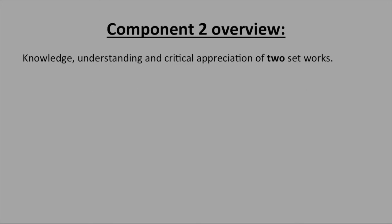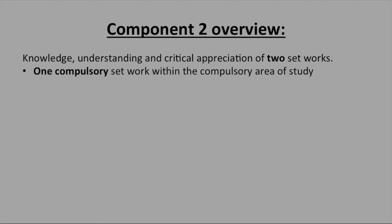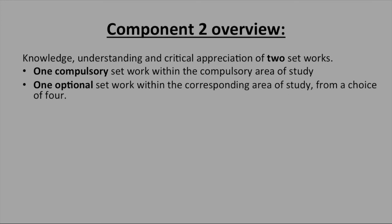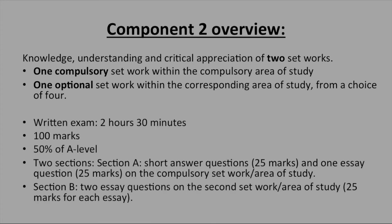For component two, critical engagement, students need knowledge, understanding and critical appreciation of two set works: one compulsory set work within an area of study, and one optional set work within the corresponding area of study from a choice of four. The written exam is 2 hours 30 minutes, totalling 100 marks, which is 50% of the A-Level. There are two sections: Section A has a short answer question worth 25 marks and one essay question also worth 25 marks, both on the compulsory set work. Section B has two essay questions on the second set work and area of study, worth 25 marks each.